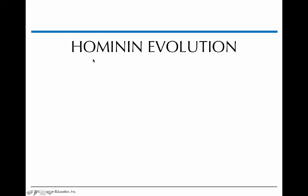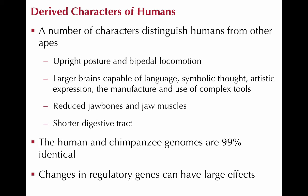Looking at hominin evolution: hominins are human ancestors — the Homo group and the ancestral or relative groups. When we look at humans, things that are different from the other apes include being bipedal — walking on two legs — although some other apes can walk on two legs at times. Humans also have larger brains, symbolic thought, artistic expression, and culture development.